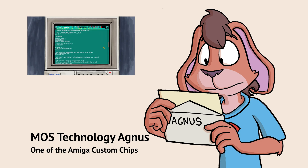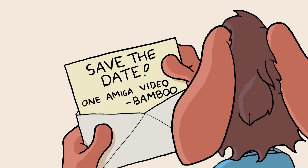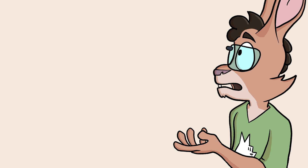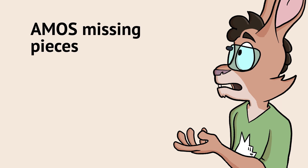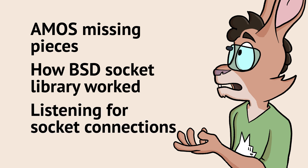Luckily, I had an Amiga emulator all set up from when I did the copper demo video. That was a research piece for a future Amiga video, or two, or six, or… So I decided to see what I could do. I quickly realized that there were three issues. My copy of Amos Basic was missing pieces I had been using 23 years ago. I didn't know how the system library I was wrapping — the Amiga BSD socket library — even worked. And at the time, I didn't understand how to listen for network socket connections correctly.